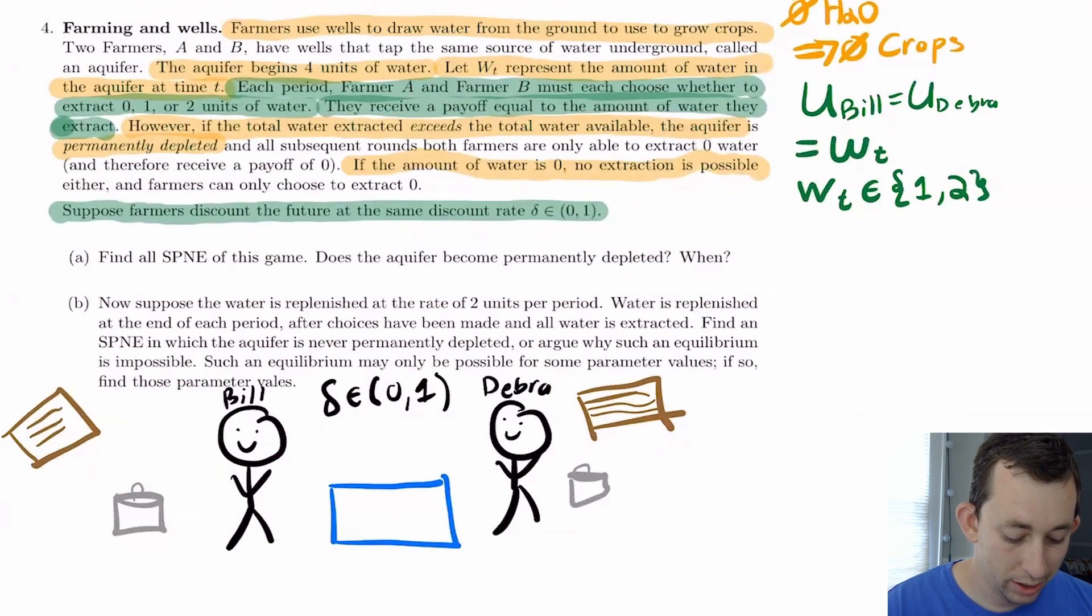I have two farmers A and B, I'm going to call them Bill and Debra just for fun. They each have wells that tap the same source of water underground. We'll call that an aquifer. And we're going to say that aquifer has four units of water. Since I'm thinking about pulling water out of a well, I'm going to say four buckets worth and they're each deciding how many buckets of water to pull out of this well. So big WT represents the amount of water in the aquifer at time t. Now we've had the setup in our mind and we can think about how the game is starting to work.